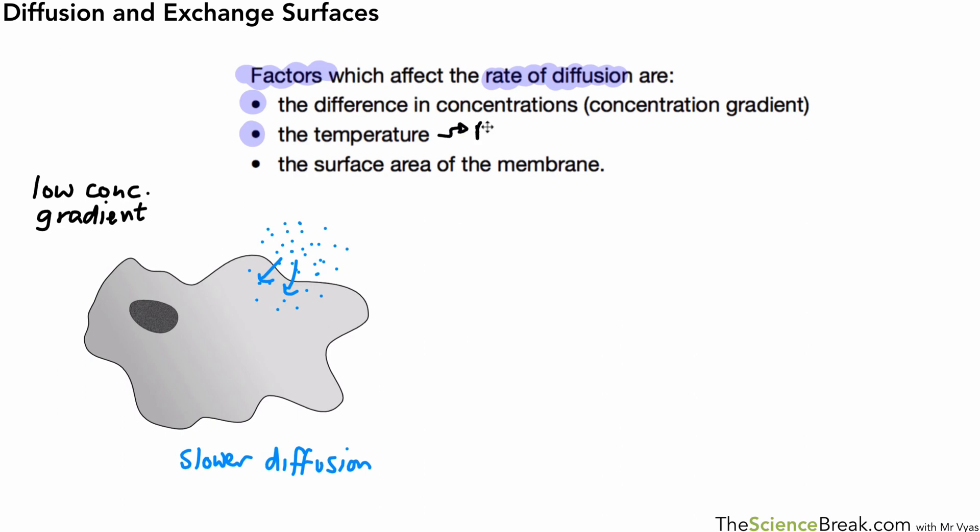The temperature also has an effect. When we raise the temperature, particles are able to move faster. The reason they move faster is because they have higher kinetic energy. Higher temperature means higher kinetic energy of particles, and therefore diffusion happens more rapidly with higher temperatures.